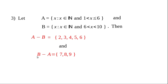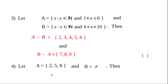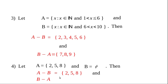Fourth example: A = {2, 5, 8} and B = empty set. Then A minus B — there is no element in B, so A minus B equals A itself. And B minus A — we want to list elements in B which are not in A; we cannot find any such element. Therefore B minus A equals the empty set.